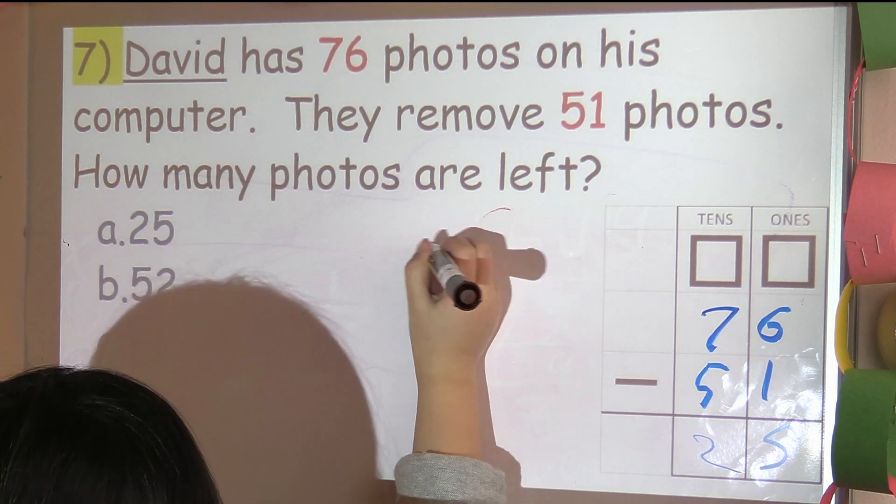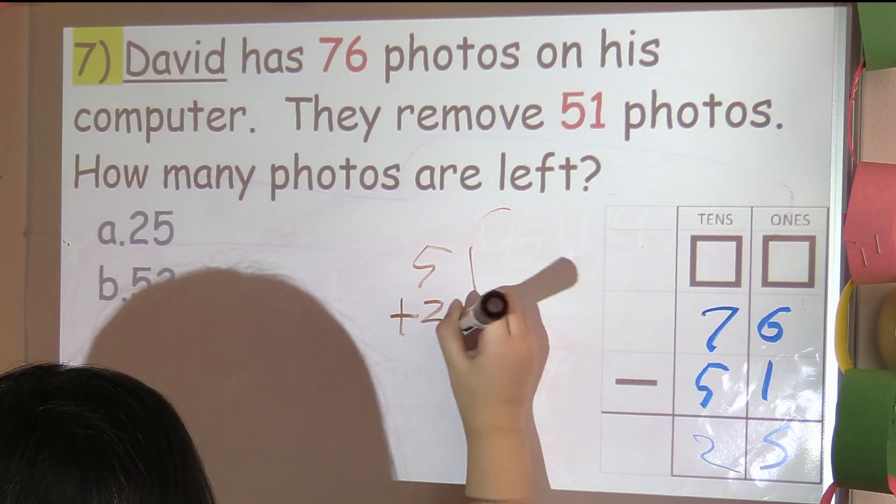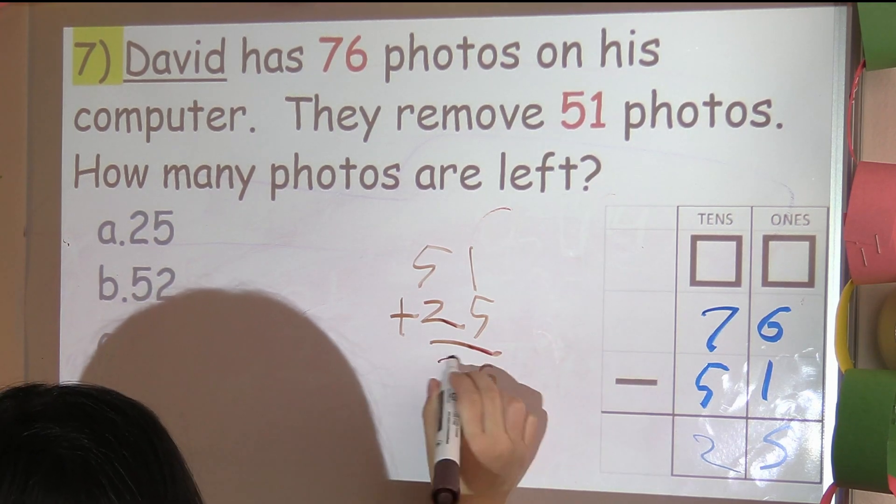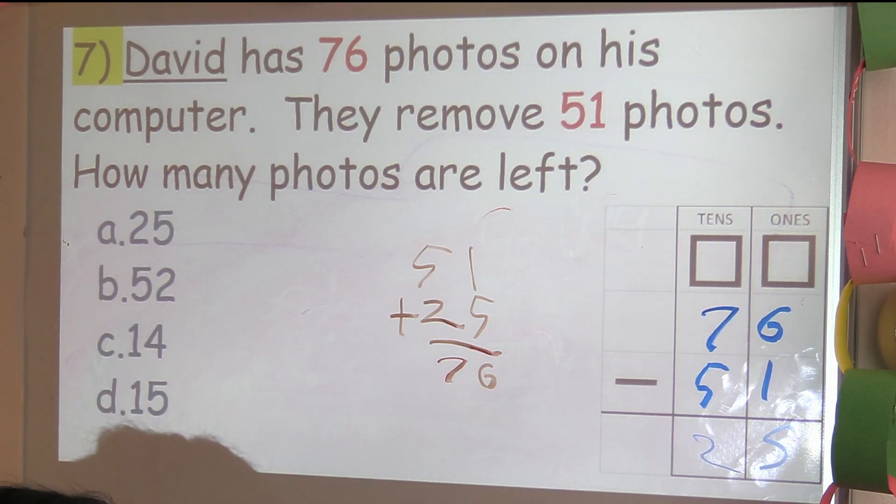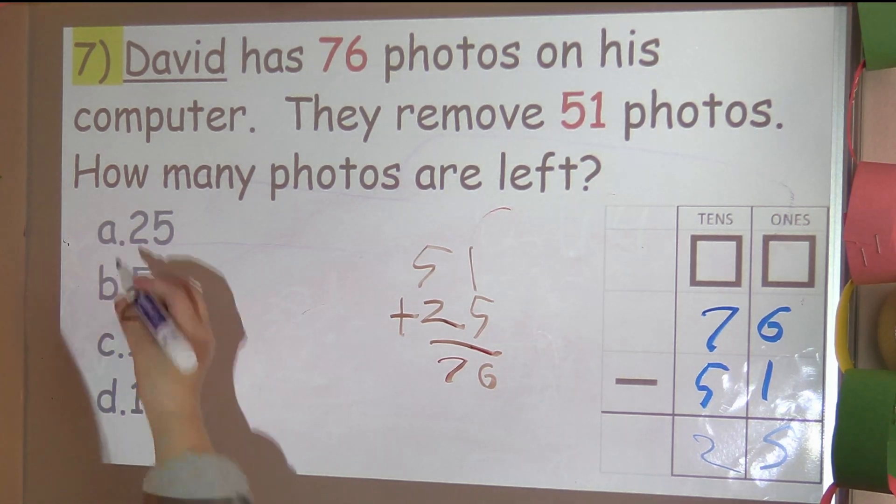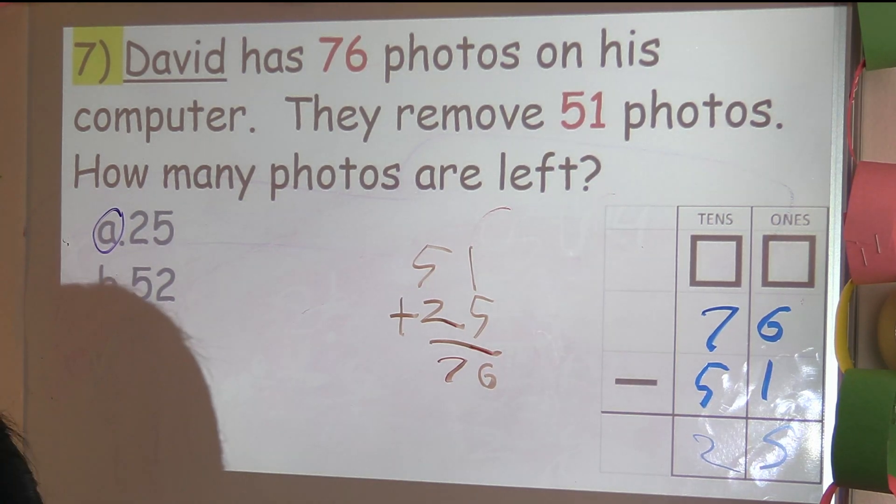Now let's see if our answer is correct, let me double check it. 51 plus 25 and we get the same answer. Well done. You'll see here that I have the number 25. Yeah, it's A. Circle and mark it.